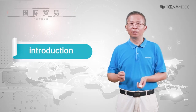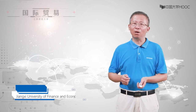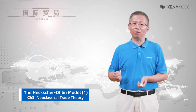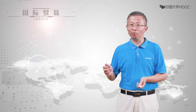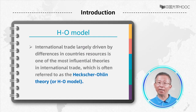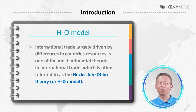Let's look at the brief introduction. In the Ricardian model, competitive advantage could arise only because of international differences in labor productivity, which means different labor productivity is the only basis of international trade. However, in the real world, international trade could occur if countries have different resources. For example, China has competitive advantage in labor-intensive products because China has abundant labor. International trade is largely driven by differences in countries' resources.